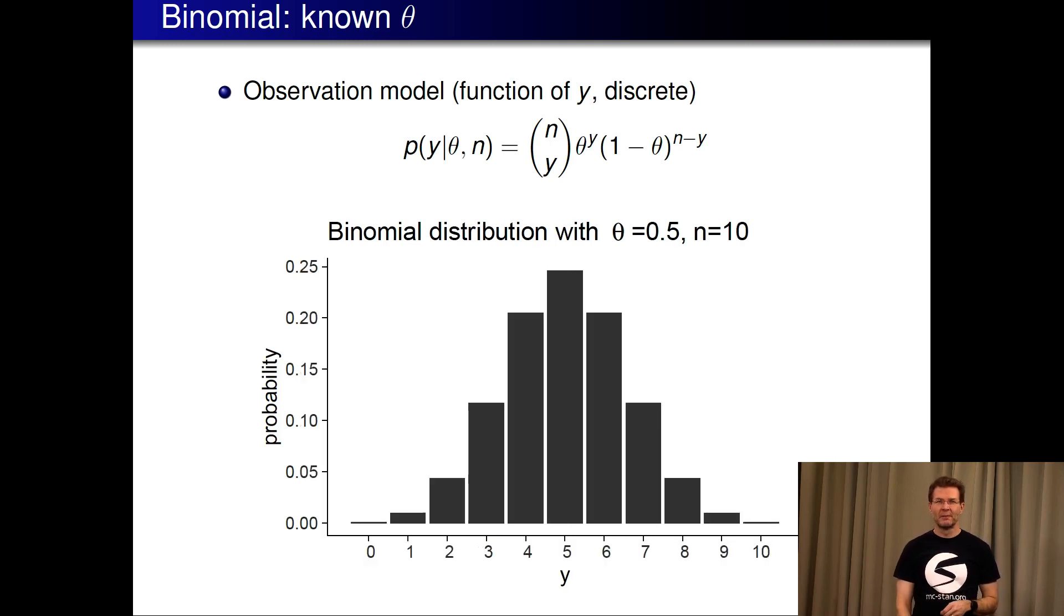If we keep flipping this coin many times, ten times, you can see now there's variation in how many times we might see theta. It's most likely to see five, but there's quite a lot of probability mass combined also for the other options, and so there's variability what we might see if we flip a coin ten times.